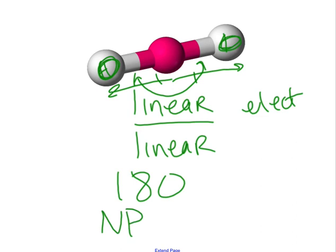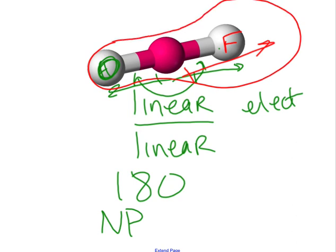When we start bringing lone pairs into them, it's going to mess things up. Everything on the table is under the assumption that we're attaching the same atom to the central atom. If we were to make this fluorine, we would have more of a dipole moment toward that fluorine. You'd have an uneven distribution of charge, and it would make it polar.